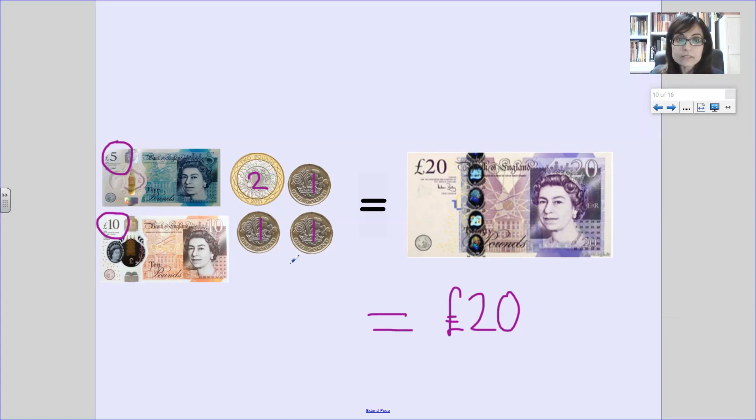We've got twenty pound on this side too. So, if you had all this money in your pocket, you had a ten pound note and a five pound note and some coins, and somebody else and your friend had a twenty pound note, you've got the exact same amount of money. You've got the same value, even though you've got different types of coins and different notes.